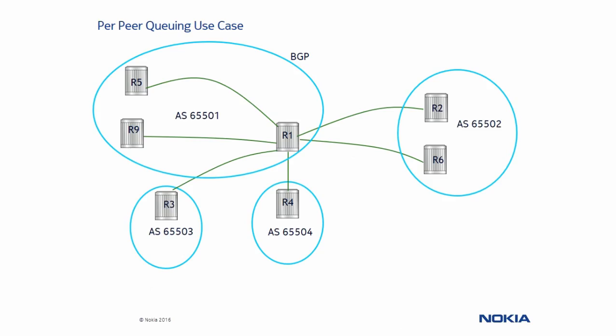This is the use case where we have per-peer queuing. Router R1 is connected to six BGP peers. We will enable per-peer queuing and show how it automatically creates queues and allocates specific parameters for each TCP session.